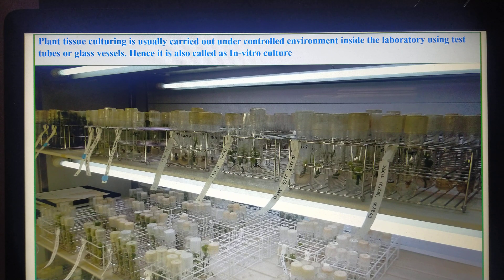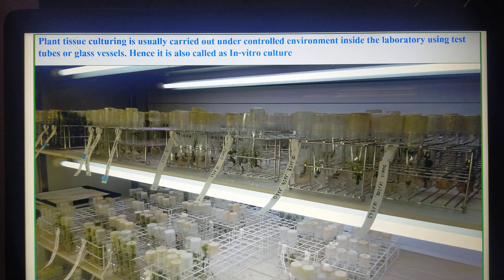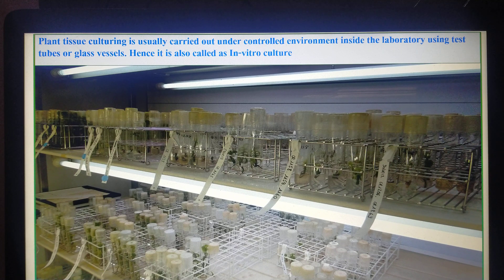Plant tissue culture is carried out under a heavily controlled environment inside the laboratory. All tissue culturing is carried out in glass tubes, glass vessels, conical flasks, petri dishes, or test tubes. That is why it is also called in vitro culturing — 'in vitro' means inside glass in Latin. Since we are culturing tissues inside glass vessels, PTC is also called an in vitro culturing technique.